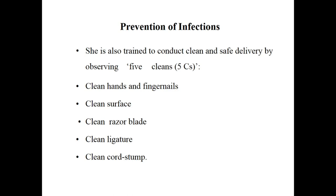For prevention of infections, we have the five C's — the five cleans. First is clean hands: before delivery, hands and fingernails must be cleaned. Second is clean surface: the surface where the woman is going to be laid for delivery. Third is the clean razor blade, used for cutting the umbilical cord — the connection between the baby and the mother — so a clean blade must be used.